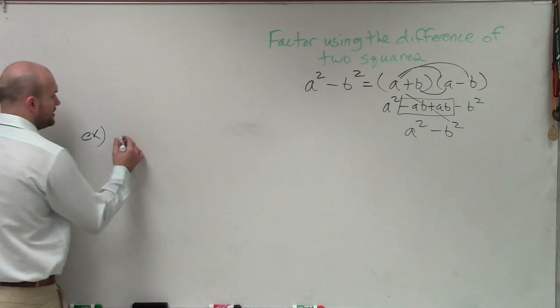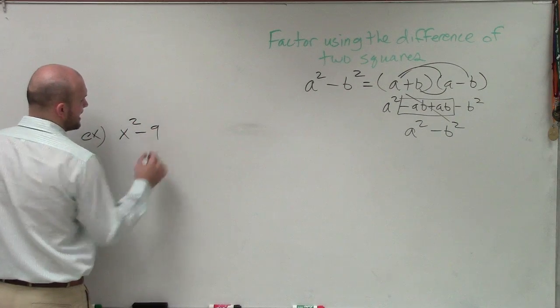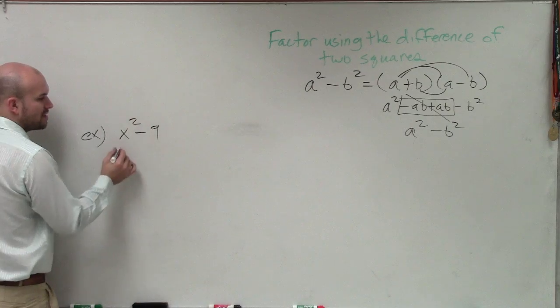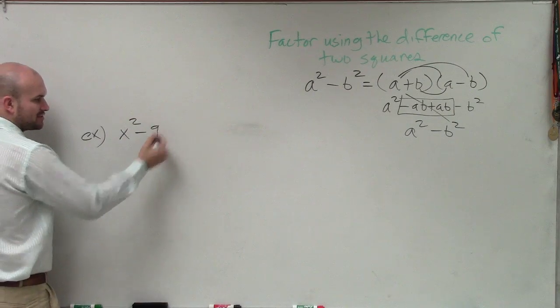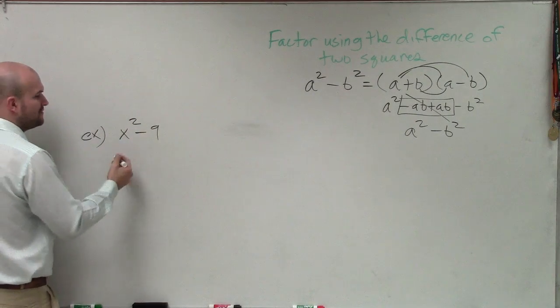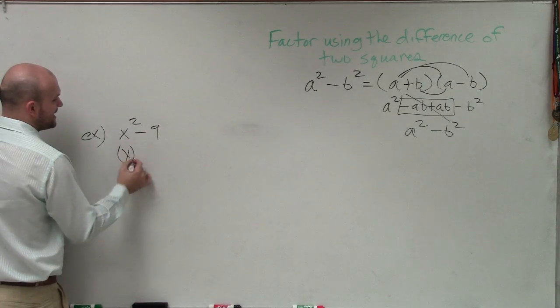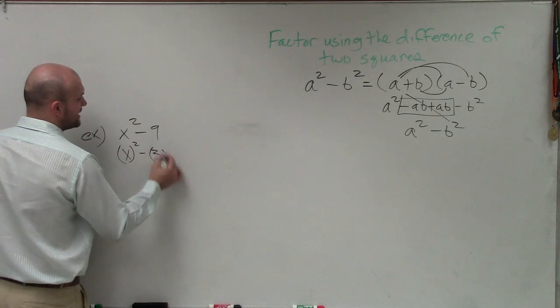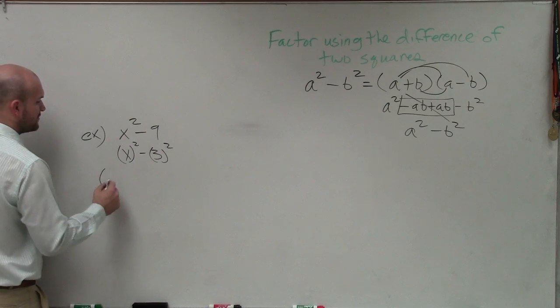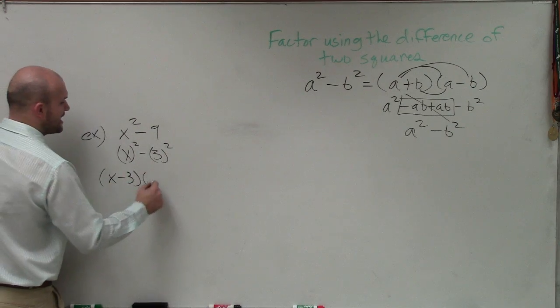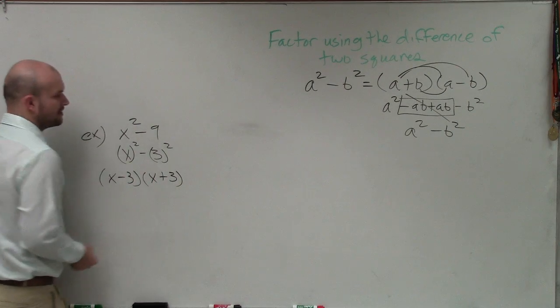So let's just kind of go through a basic one. Let's say I had x squared minus 9. Well, notice that this is a square term, and this can be written as a square term. I already know that 9 is 3 squared, so therefore I can write this as x minus 3 times x plus 3.